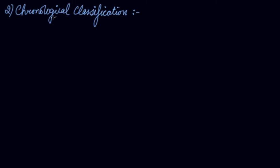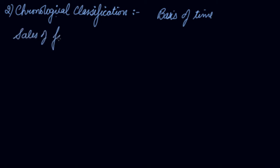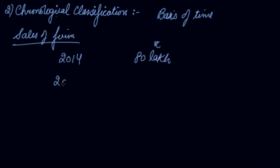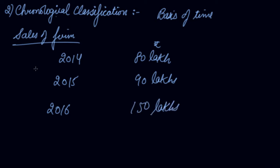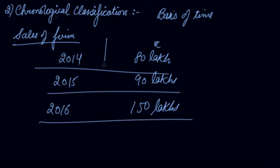Chronological classification means classifying your data on the basis of time. For example, the sales of a firm: in 2014 the sale was 80 lakhs, in 2015 it was 90 lakhs, in 2016 it was 150 lakhs. Classifying data yearly on the basis of time is chronological classification.